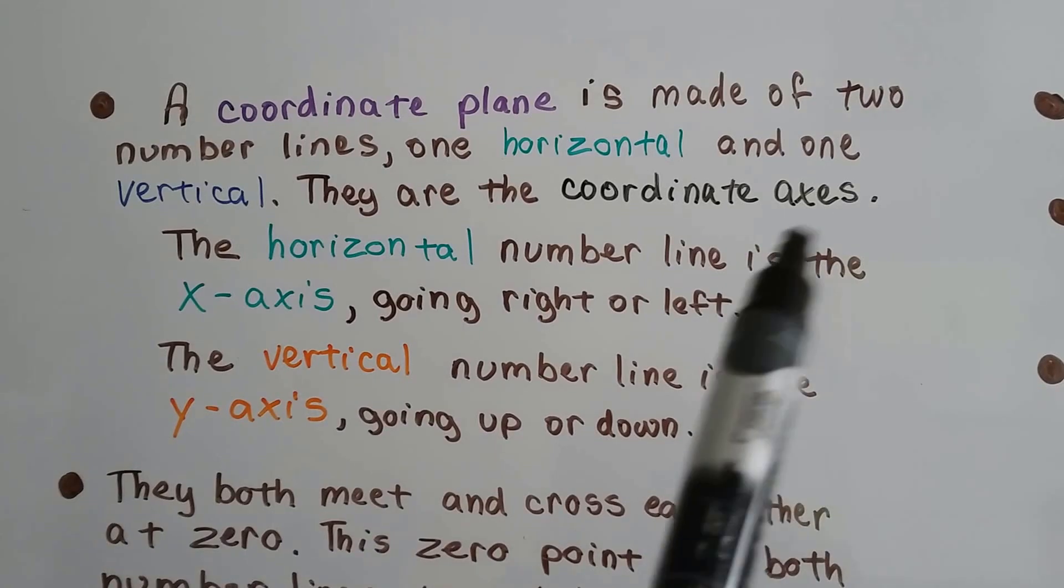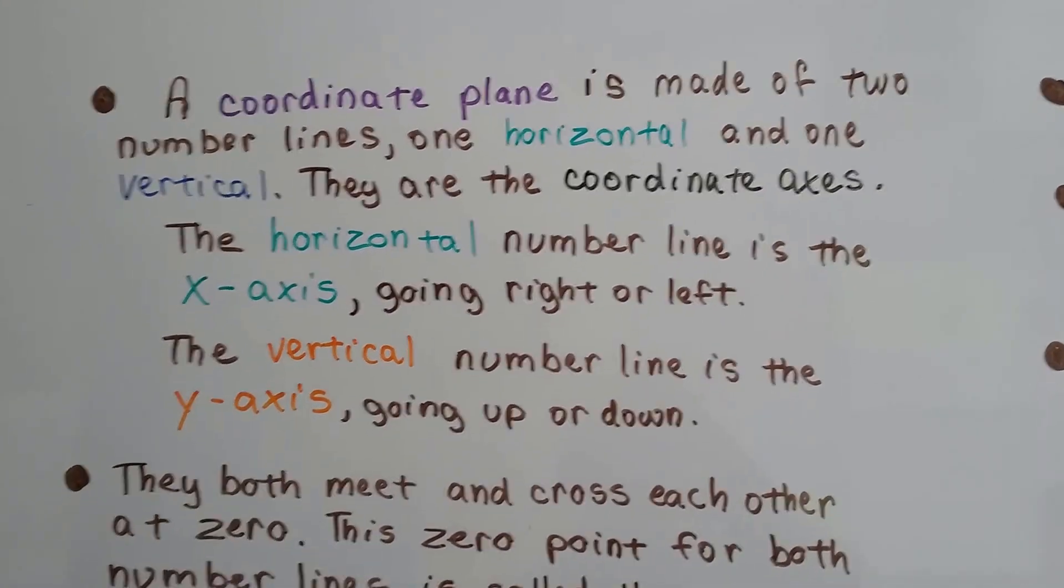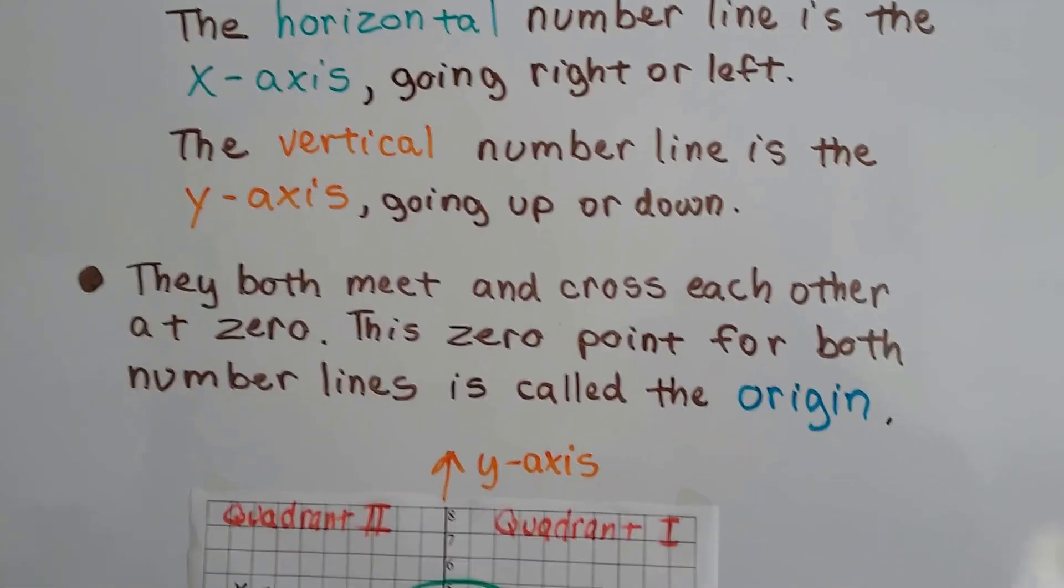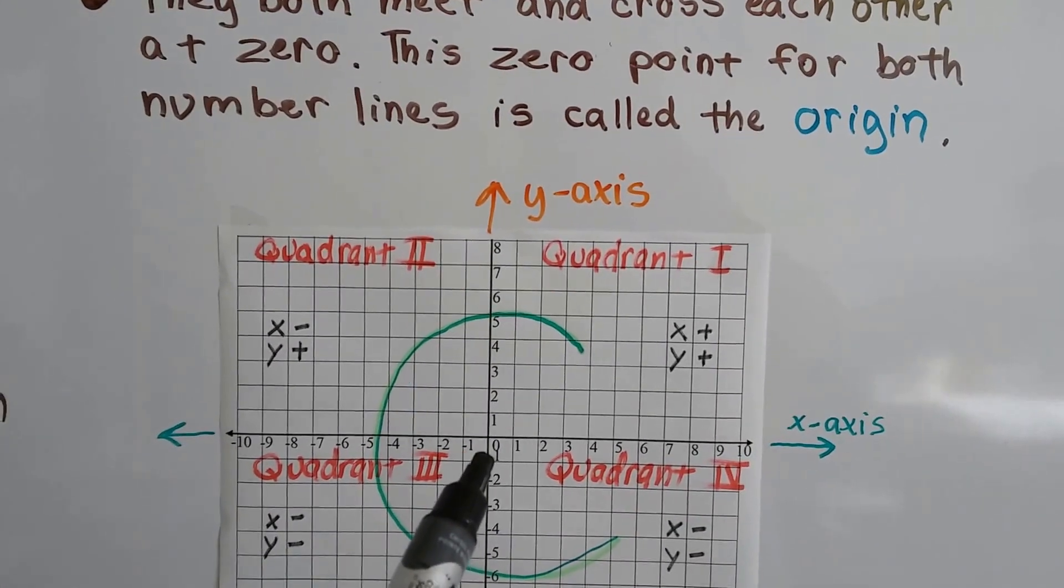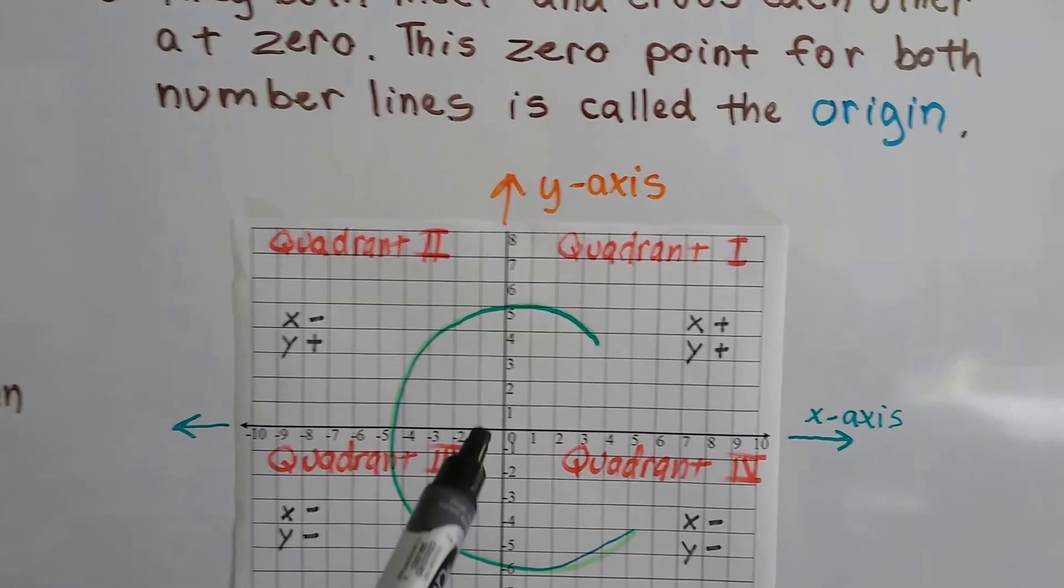They both meet and cross each other at zero. This zero point for both number lines is called the origin. It's the very center. That's the origin.